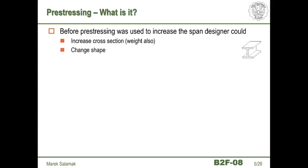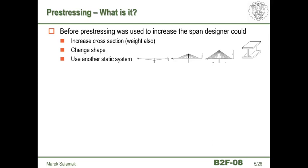We can also change the shape of the cross section. For beam bridges dealing with classic bending, we have known for almost 200 years that the optimal shape is an I-beam — except that very rarely can we use pure I-beams in bridges, as we usually have a deck on top. So we can change the static scheme: instead of a freely supported beam, we can use a continuous beam, a frame, arched or truss girders, or even more sophisticated schemes such as cable-stayed or suspension bridges. We are still looking for new systems, and this is how extradosed bridges were invented recently at the end of the 20th century.